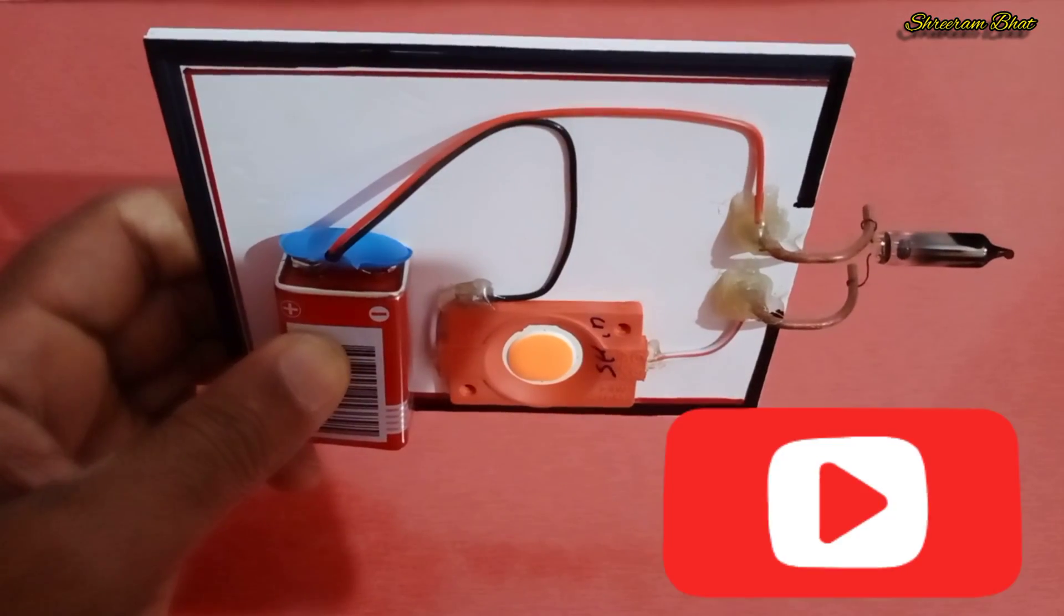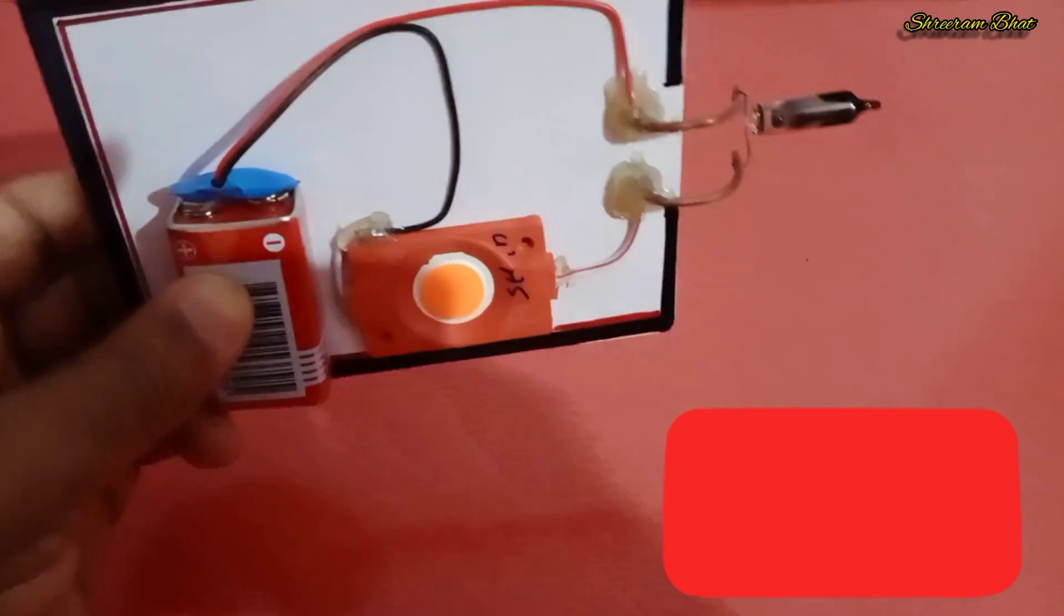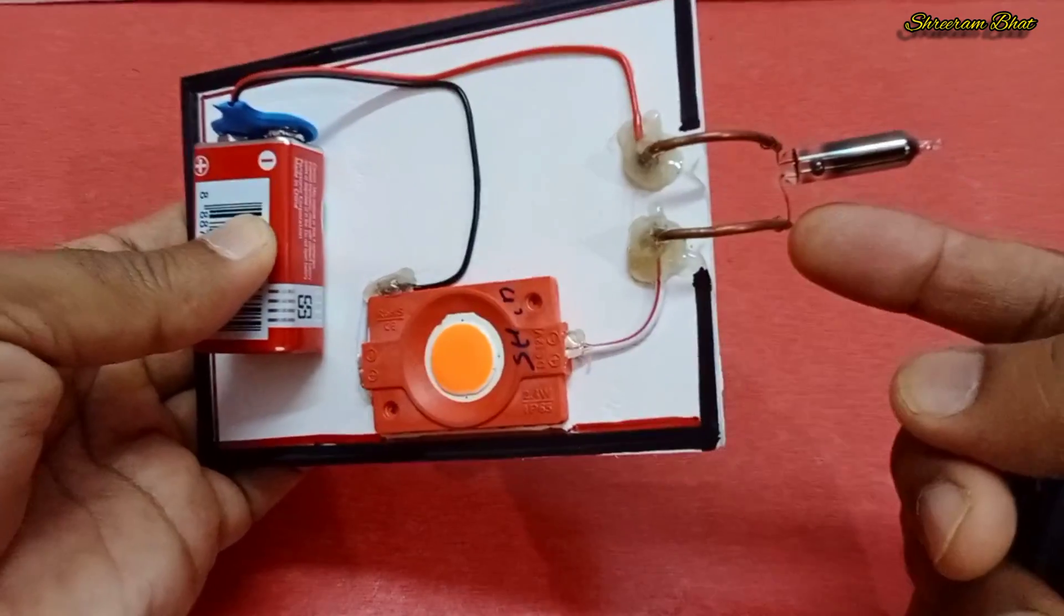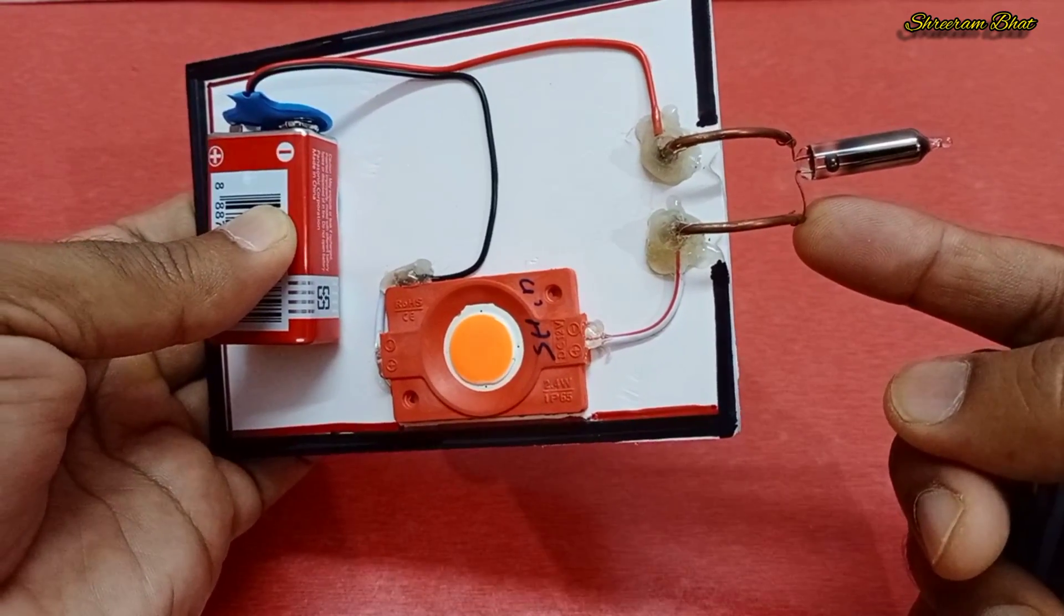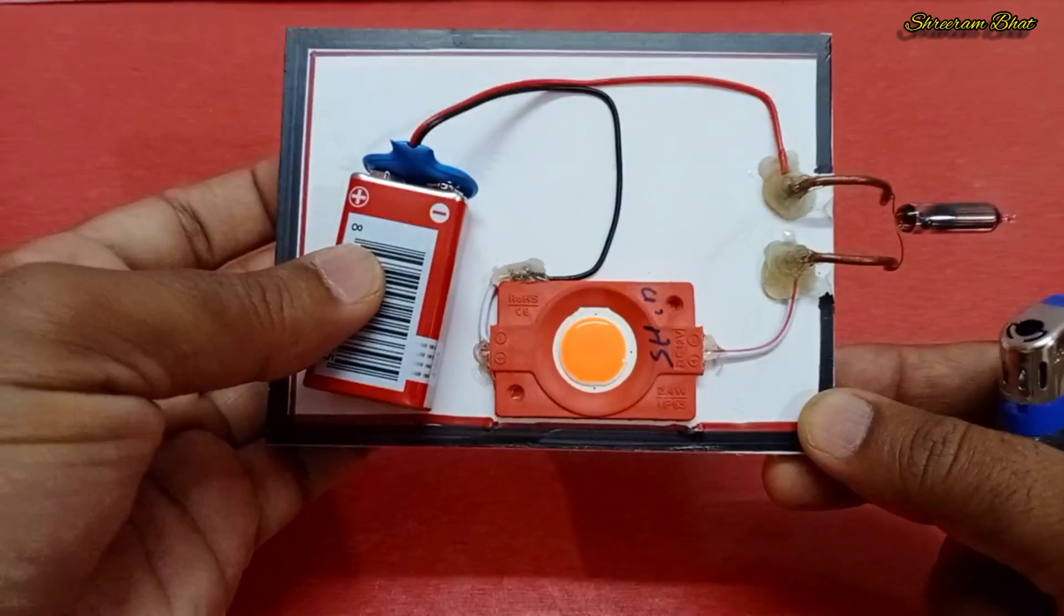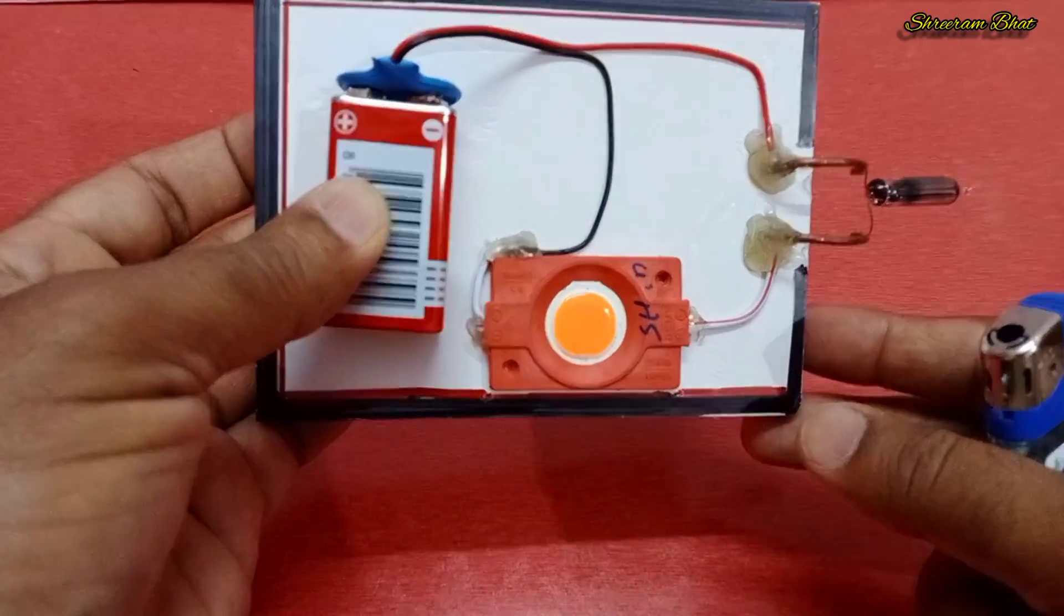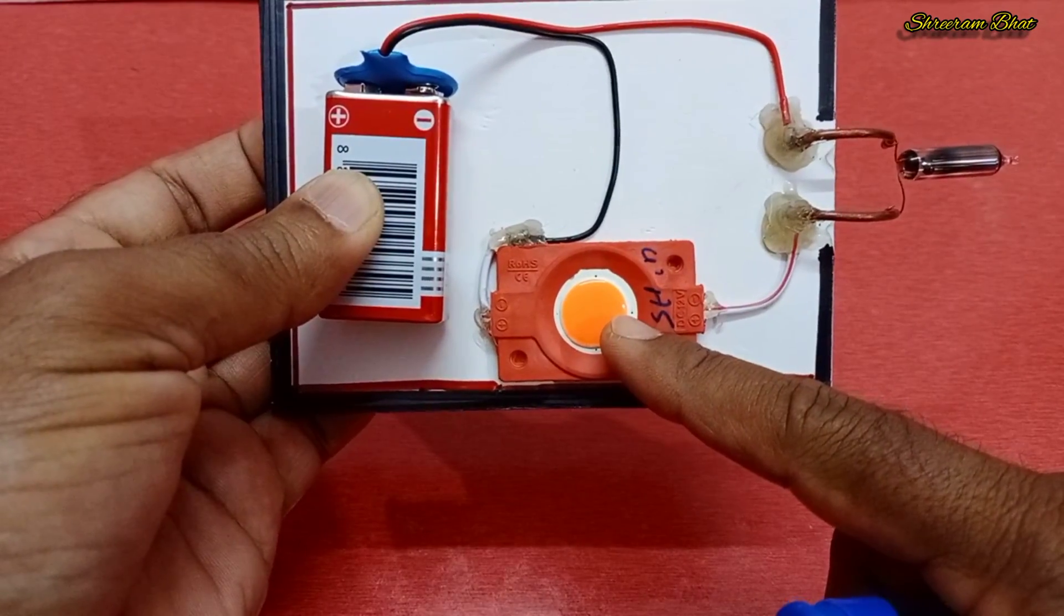If it is cooled, it will bend opposite and the light will turn off. This is a simple circuit with an LED bulb and a 9V battery.